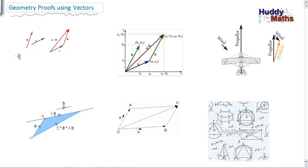Let's start by reviewing the idea of addition of two vectors, moving from the scale drawing approach to the ordered pair approach on a Cartesian plane. We also looked at a practical application — the direction of a plane as a vector, combined with the wind vector, to find the resultant path. And we looked at finding the equation of a line using vectors. Now we're moving into a geometry approach.